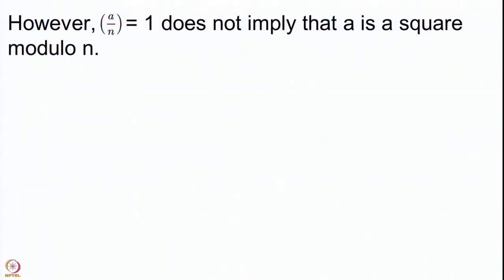However, for the Legendre symbol we had an if-and-only-if statement — we defined it with the very motivation of determining squares modulo a prime p. So we started with squares modulo p, defined the Legendre symbol, then defined the Jacobi symbol as its generalization. Now: whenever a is a square mod n the Jacobi symbol equals 1; if the Jacobi symbol equals −1 then a is not a square. But it is quite likely that a is a non-square mod n yet the Jacobi symbol is still 1 — so we may not have an equivalence.